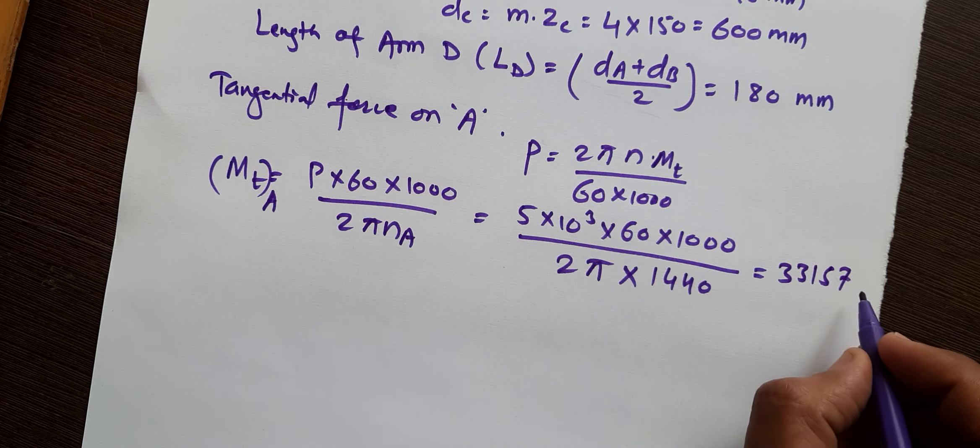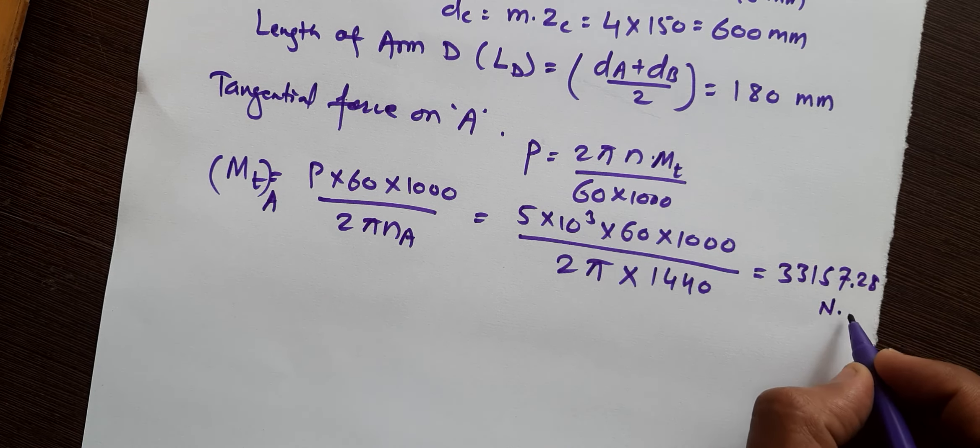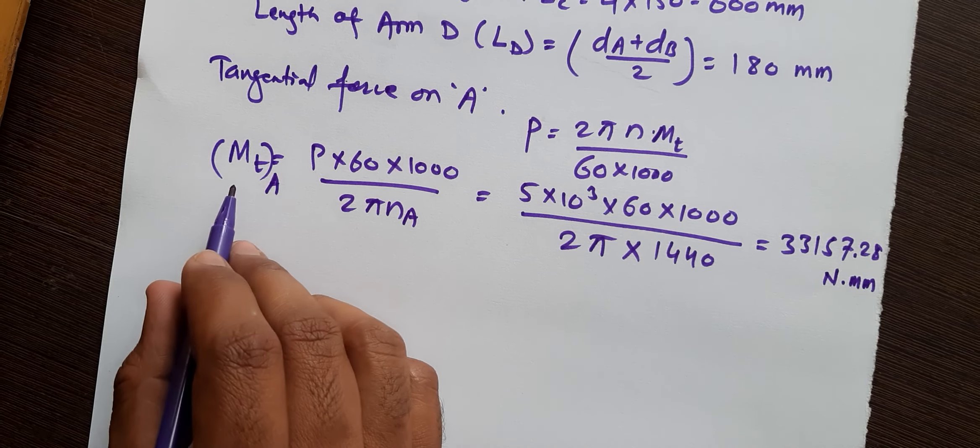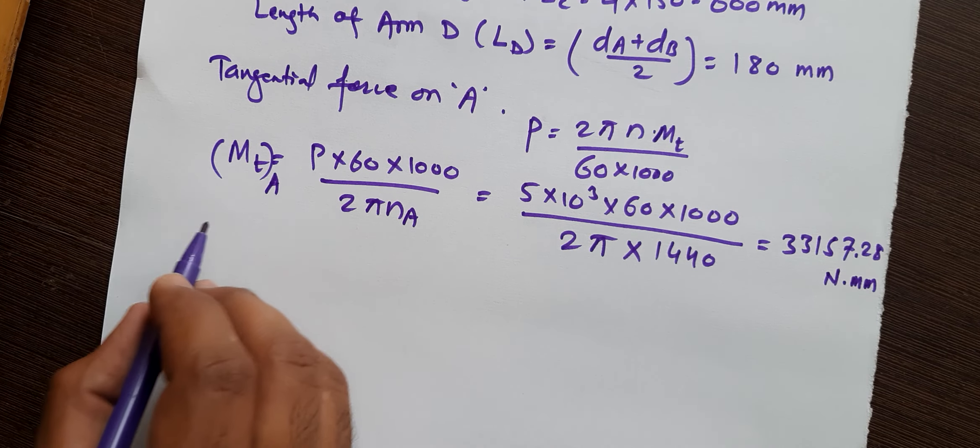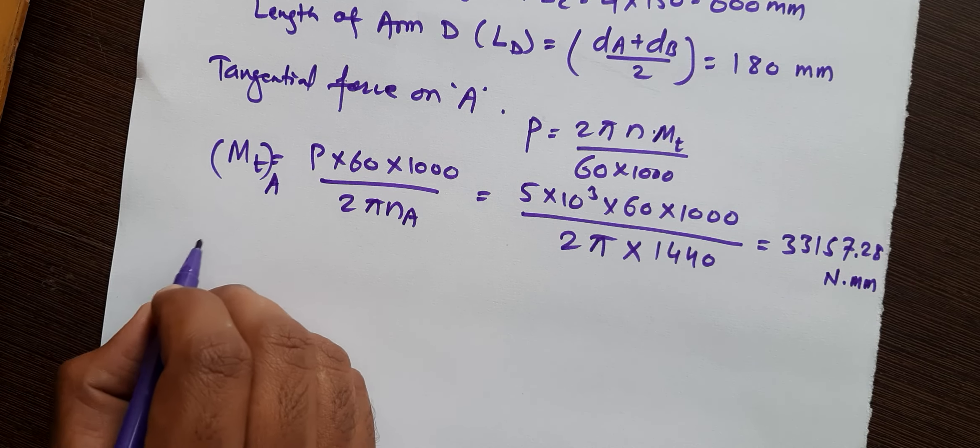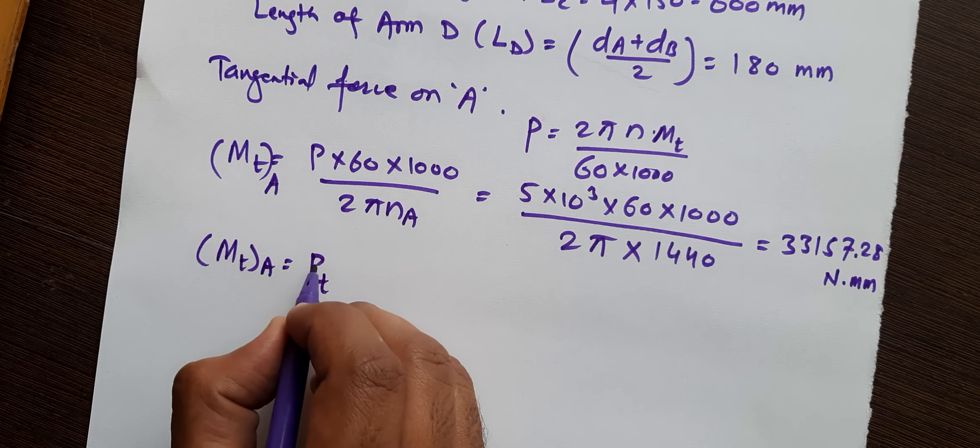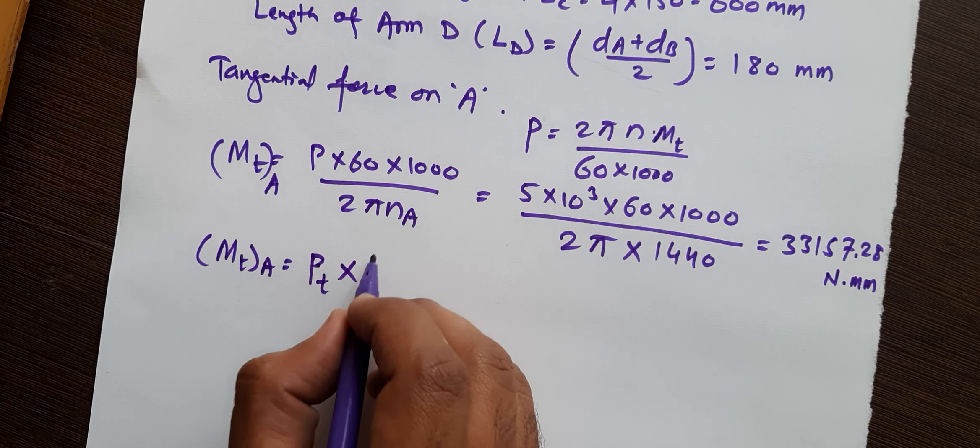Now we will find tangential force. So torque equals force times perpendicular distance. So force is PT and perpendicular distance is d/2, so here DA/2. So from this we will calculate PT on gear A equals